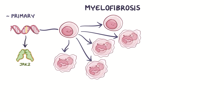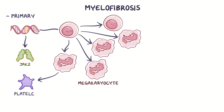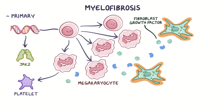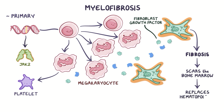A large majority of these cells turn into megakaryocytes, which go on to make platelets. These megakaryocytes release cytokines, which are molecules that create inflammation. One of these cytokines is fibroblast growth factor, which activates fibroblasts. The activated fibroblasts engage in the process of fibrosis, wherein they make lots of connective tissue that ultimately begins to fill up and scar the bone marrow, and replaces hematopoietic cells.